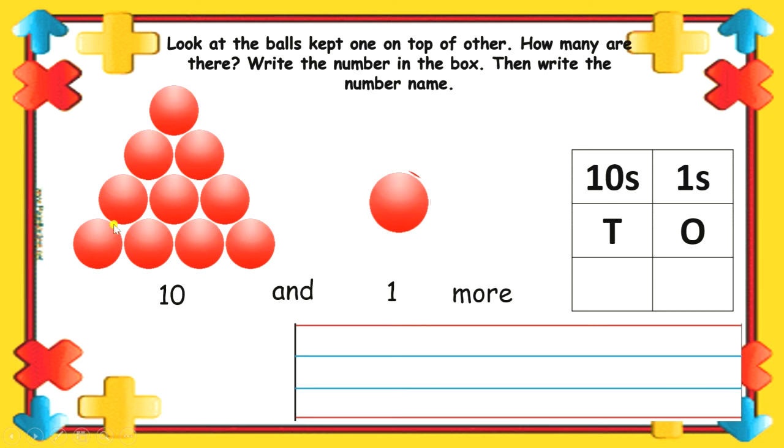10 and 1 more. It becomes 11. So, we write 1 in 1's place and another 1 in 10's place. 1 and 1 becomes 11. And the number name of 11 is E-L-E-V-E-N.